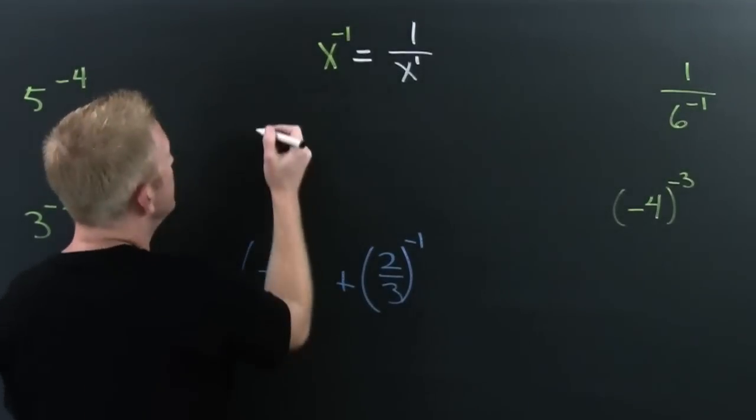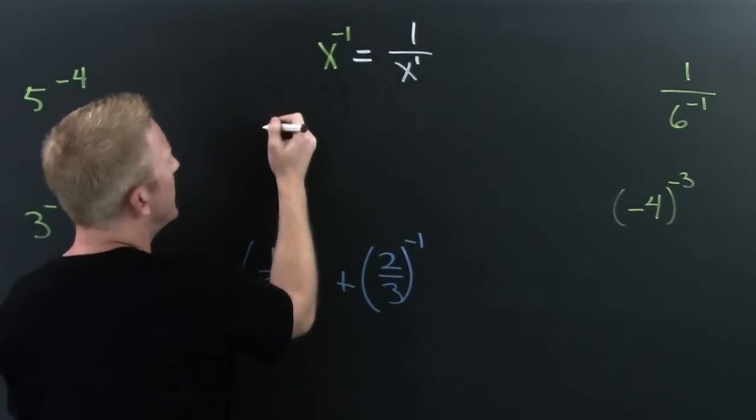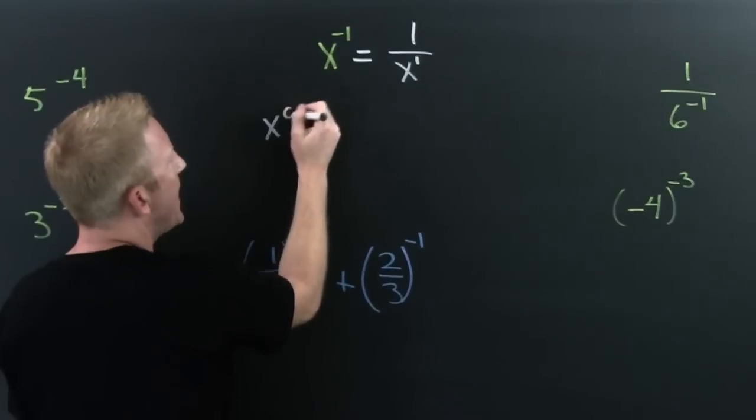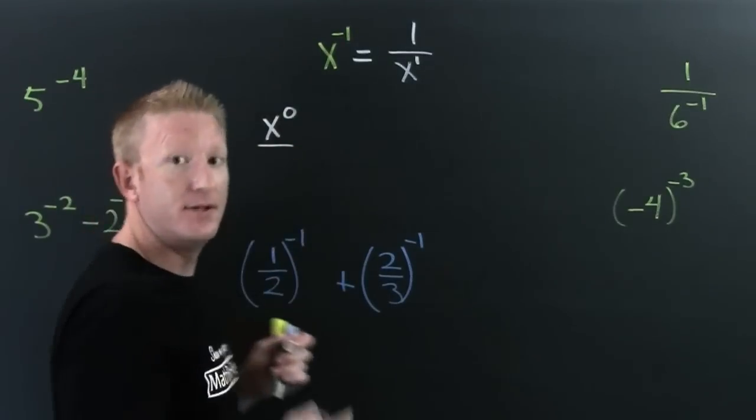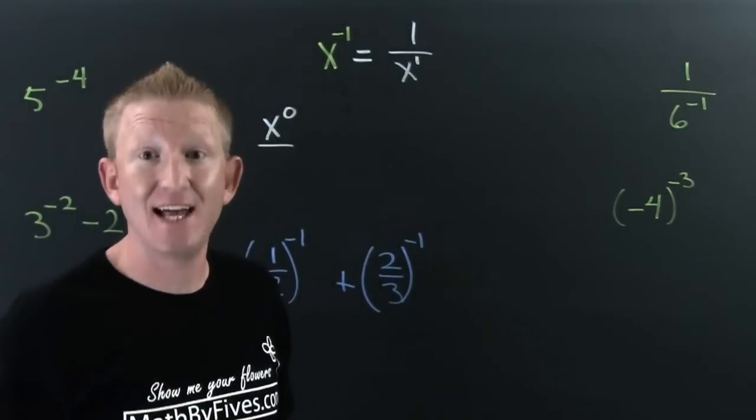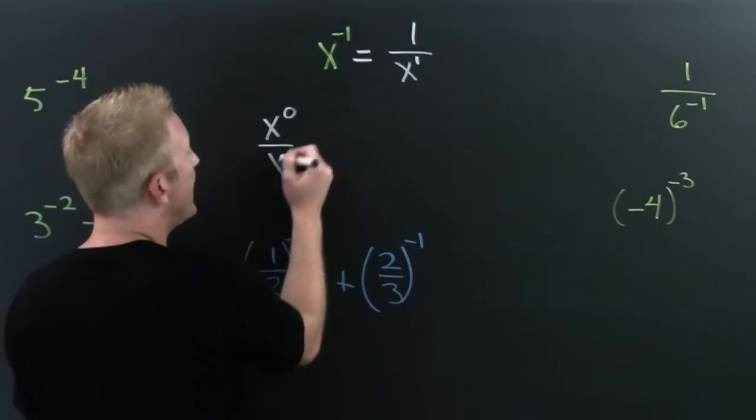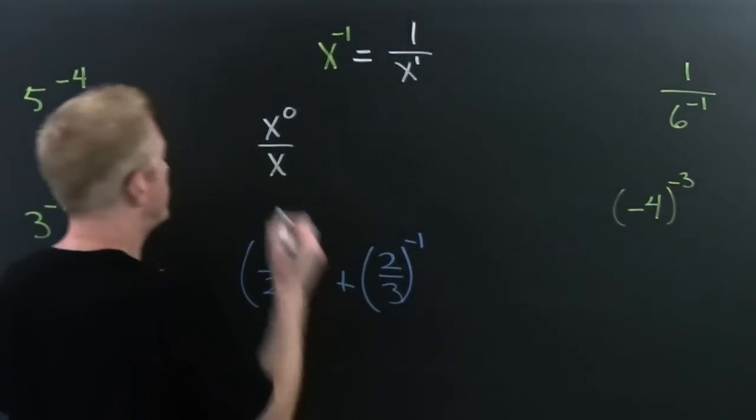Take a look at this. Wait for it. x to the 0 is 1. That was from last time. Over x. Let's just write that and consider this.